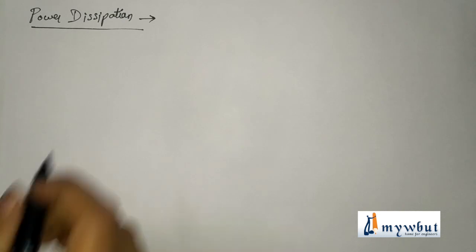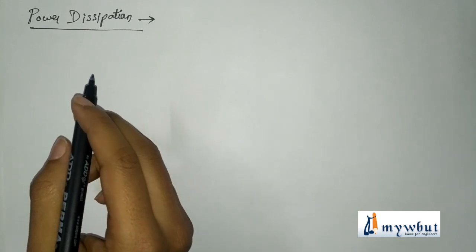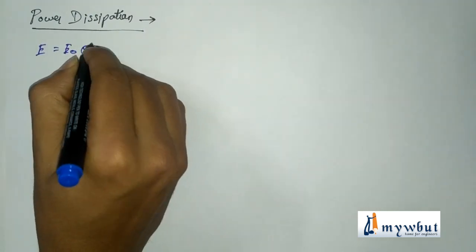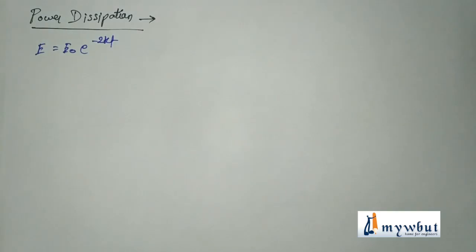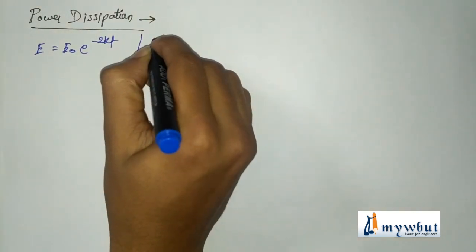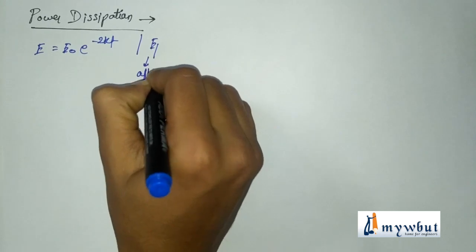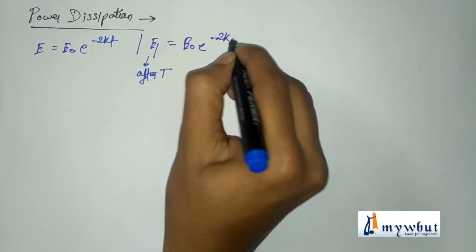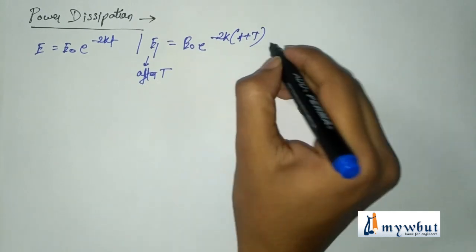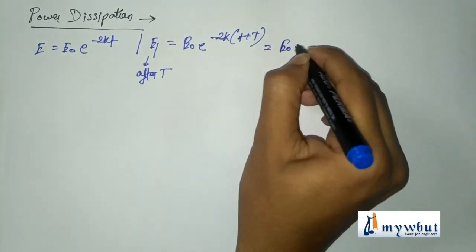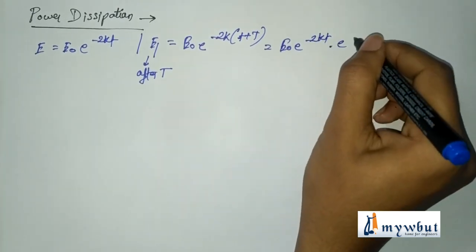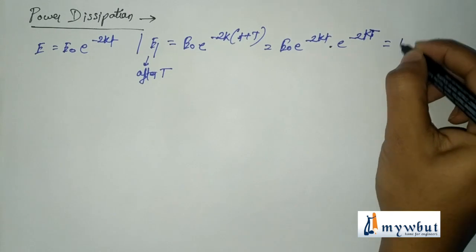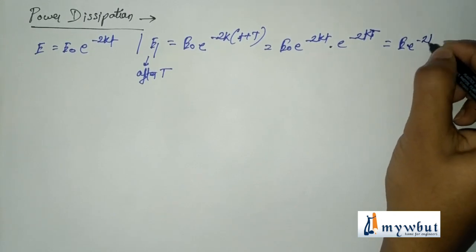We already obtained the energy of a particle of mass m for damped oscillatory motion: E equals E0 into e to the power minus 2kT. After one full time period capital T, the energy E1 equals E0 into e to the power minus 2k(T plus capital T), which equals E0 e to the power minus 2kT into e to the power minus 2k capital T, equal to E into e to the power minus 2k capital T.